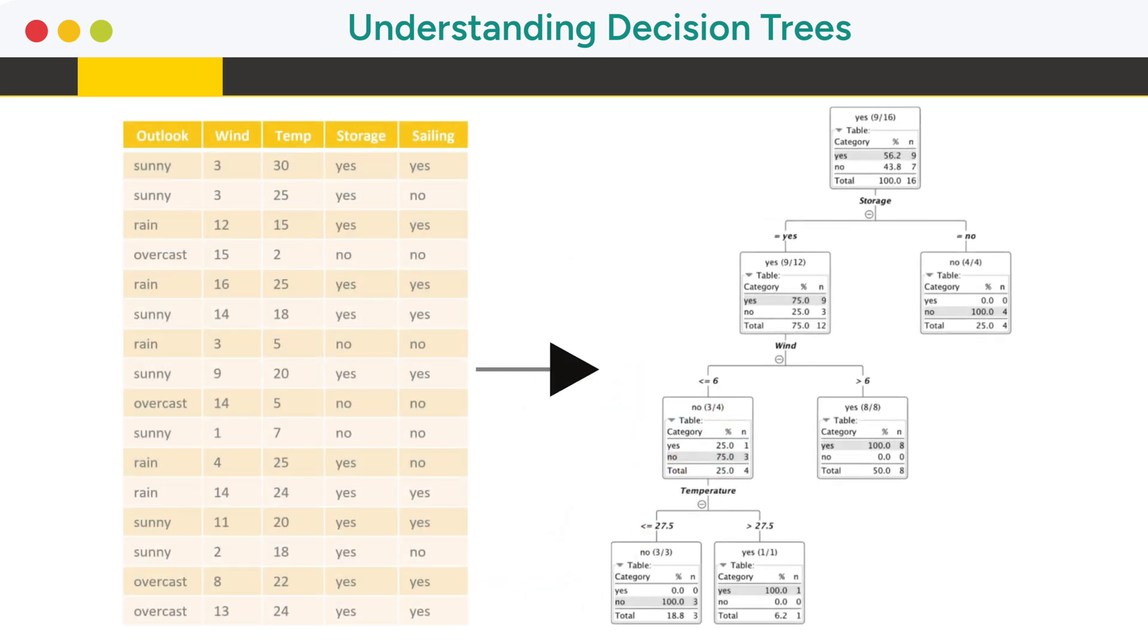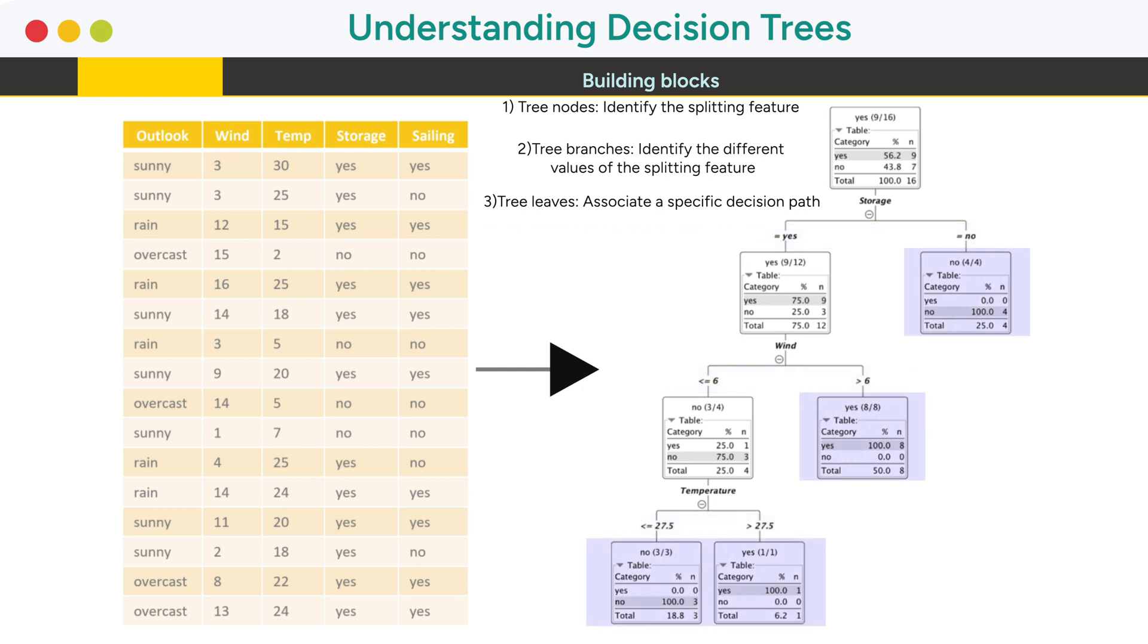A decision tree consists of three building blocks: tree nodes, tree branches, and tree leaves. Tree nodes identify the splitting feature, tree branches identify the different values of the splitting feature, and tree leaves associate a specific decision path.